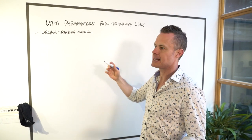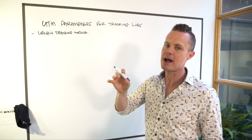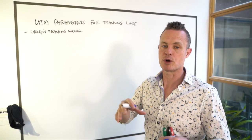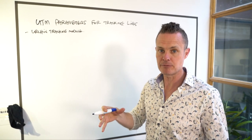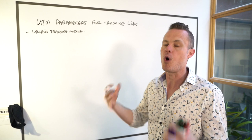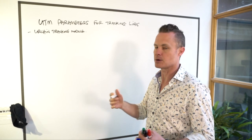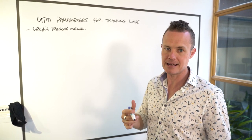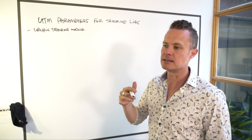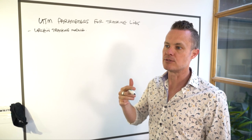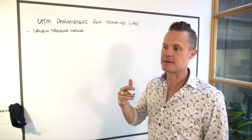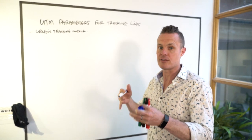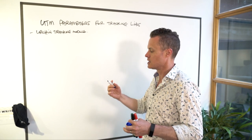UTM parameters are used when you want to track traffic coming to your website and you want to know where they've come from and why they've arrived. It gives you a little bit of context about who your web visitors are, and can also give you some context about where your conversions are coming from, so you can put more effort into those marketing channels.